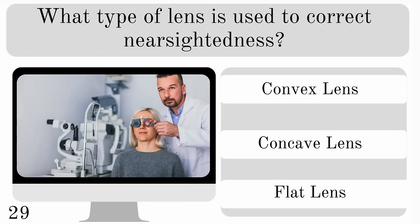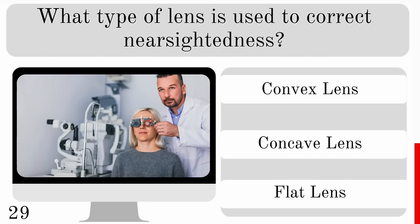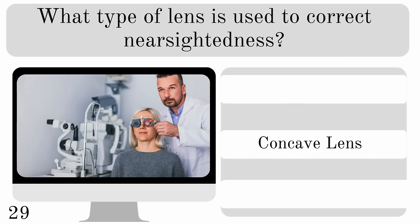What type of lens is used to correct nearsightedness? Is it a convex, concave or flat lens? And did you pick the correct one? The answer is concave.